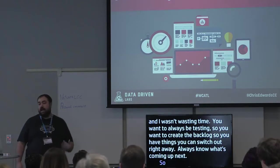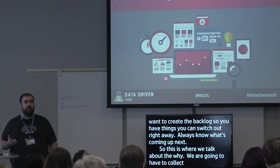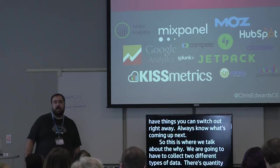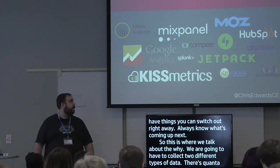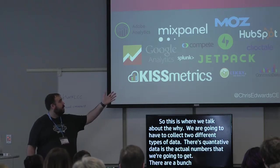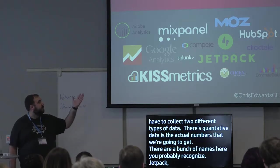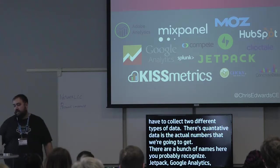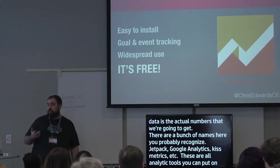We need to collect two types of data: quantitative and qualitative. Quantitative data is essentially analytics — the actual numbers. Tools include Jetpack, Google Analytics, Kissmetrics, Mixpanel, Adobe Analytics, and others. The most common is Google Analytics: easy install, goal tracking, and free. The more advanced ones like Kissmetrics start around $600 a month, Mixpanel around $100 a month, and Adobe Analytics is quite expensive.